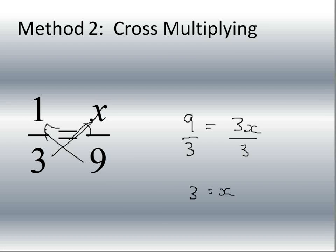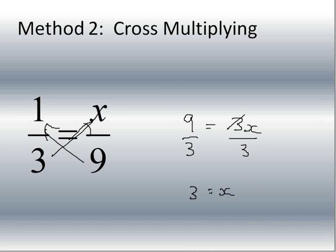In the previous method, we looked at this and said three times three is nine, one times three is three, and solved: x is equal to three. Same answer. Cross-multiplying gets the same exact answer — it just takes a little bit more time by doing that cross-multiplying process.